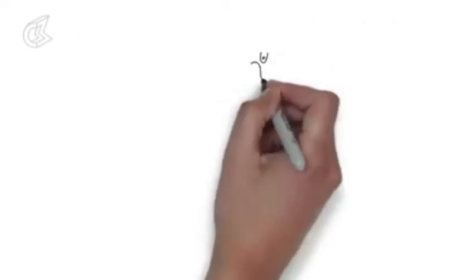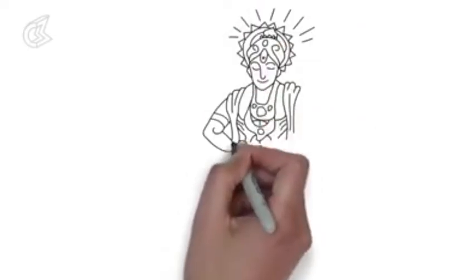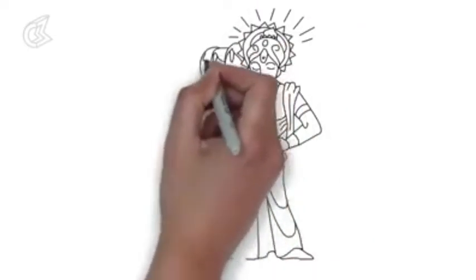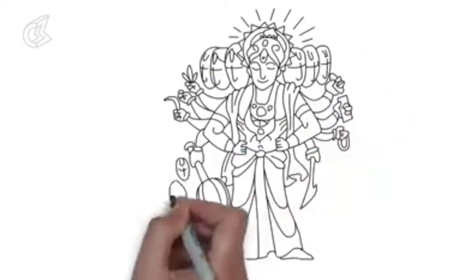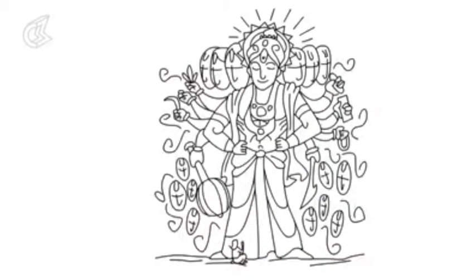Right before the final confrontation between the Pandavas and the Kauravas, Krishna, who is the universe personified, rescues Arjuna from paralyzing doubt by giving him the essence of Vedic thought, the Bhagavad Gita.